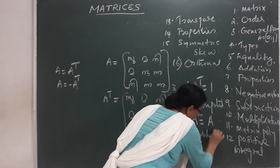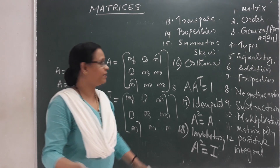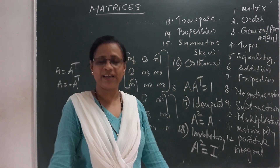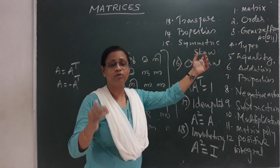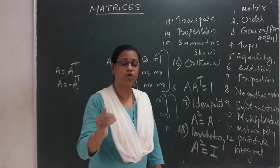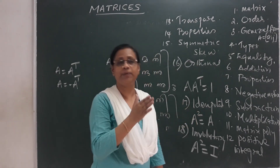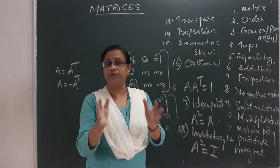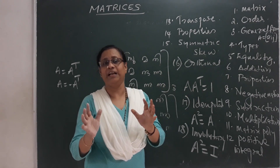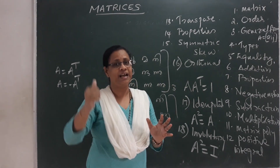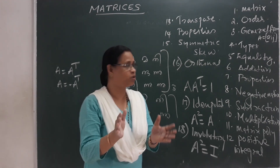Involutary matrix: A squared is equal to I. This matrix is called the Involutary matrix. What is a matrix? A rectangular arrangement of rows and columns. It has an order M by N, with elements A[i,j]. Types of matrices include: row matrix, column matrix, square matrix, null matrix, diagonal matrix, scalar matrix, unit matrix, upper triangular matrix, and lower triangular matrix.